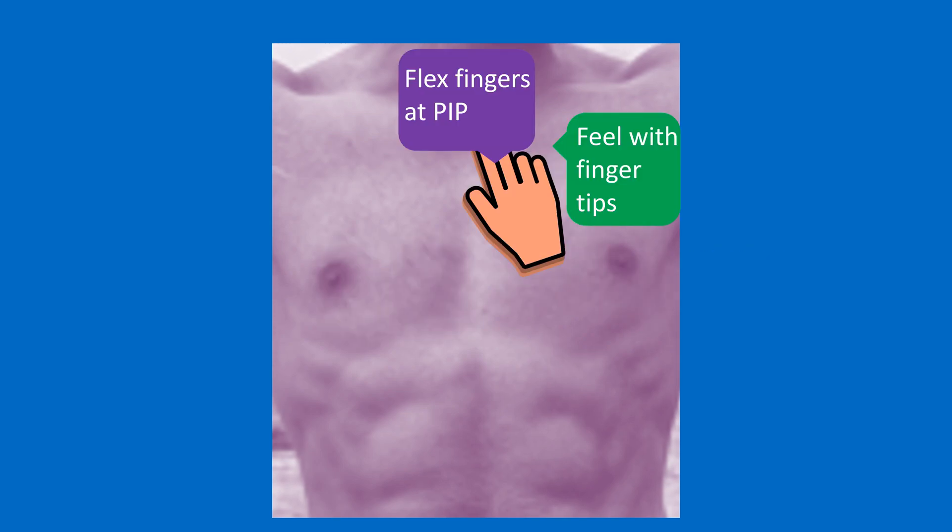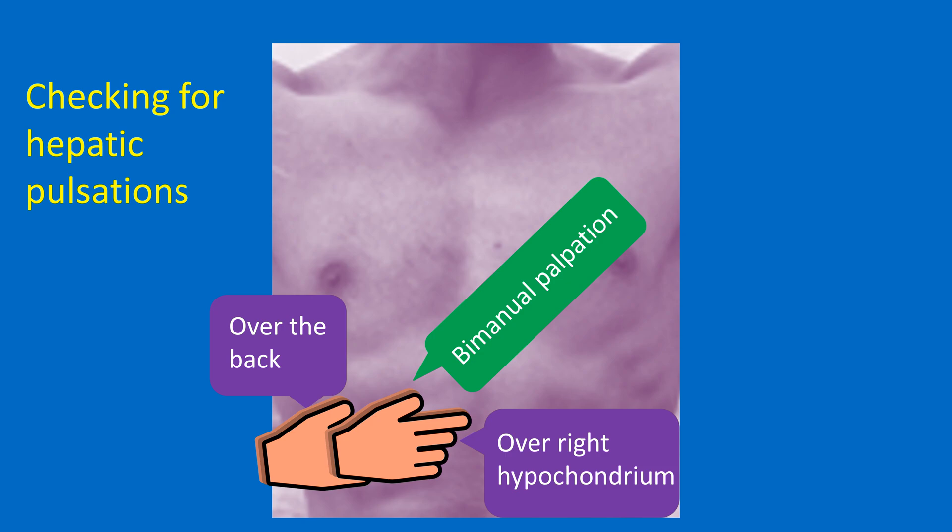Pulsations in the second left intercostal space indicate a large pulmonary artery and are better felt with the fingertips after flexing the proximal interphalangeal joints at right angles. Right parasternal pulsations may be noted if the aortic root is grossly dilated. Hepatic pulsations are better felt by bimanual palpation with one hand over the right hypochondrium and another over the back. Presystolic pulsations are noted in tricuspid stenosis and systolic pulsations in tricuspid regurgitation. The Simanowski sign refers to visible or palpable collaterals in the upper back in coarctation of the aorta, better seen on bending forward.